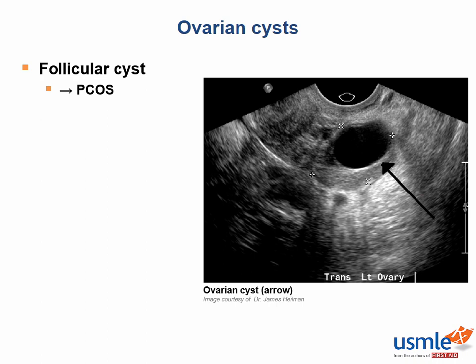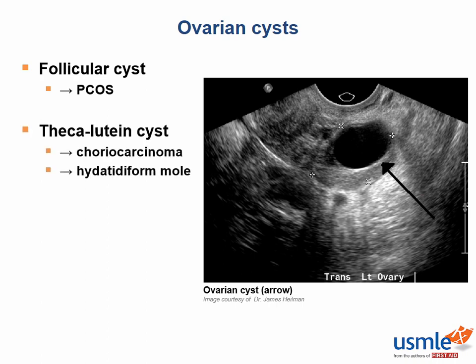Theca-lutein cysts, also called functional cysts, occur in the setting of high gonadotropins with ovulation. They are often bilateral and can be associated with choriocarcinomas.